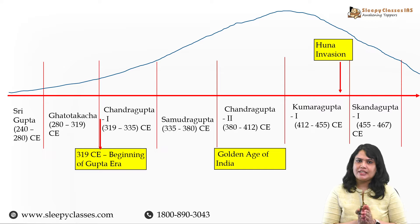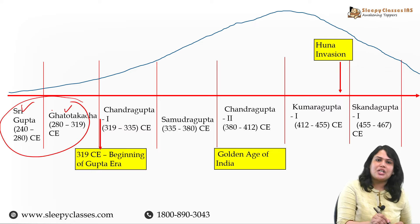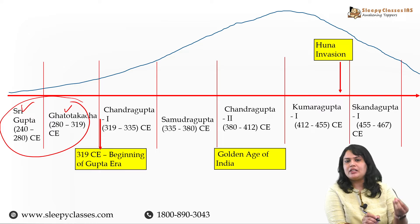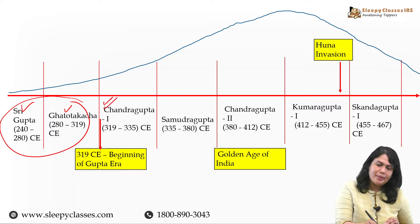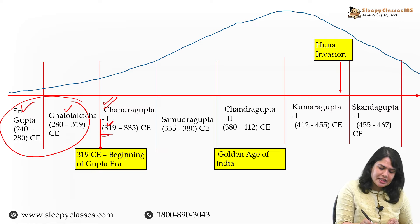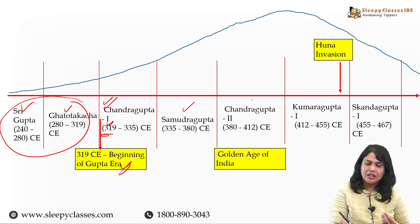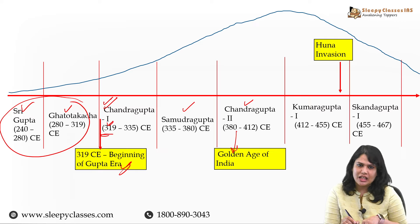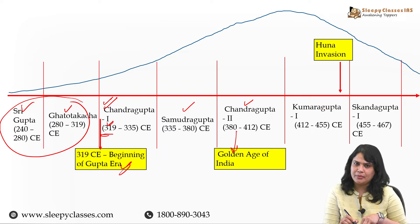Agar hum Gupta dynasty ka jo rise hai, use line graph pe plot karein, to aap dekhenge ki Shrigupta and Ghatotkacha - ye abhi bhi Kushanas ke feudal chiefs the, Maharaja title ka istemaal kar rahe the - but inhon ne apni authority ko assert kiya, Kushanas ke decline se jo opportunity arise hui thi, uska fayda lete hue. Aage chalke hum dekhte hain ki Chandragupta First - ye first independent ruler hain, jinhe real founder of Gupta dynasty kaha jaata hai - aur inka jo ruling period hai, uska starting year Gupta era ke beginning ko mark karta hai. Empire ka extension and expansion hota gaya Samudragupta ke time par aur Chandragupta Second ke time par. Chandragupta Second ka jo time period hai, use golden age of India kaha jaata hai, because is time par hum dekhenge ki literature ke andar and other aspects of art and culture mein significant developments hue.